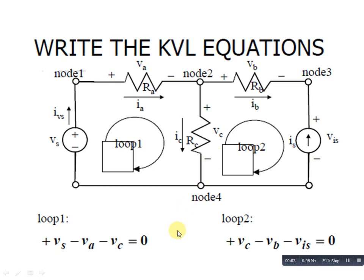In this lecture I will explain how to make KVL equations for a particular circuit. In this diagram we have loop 1 and loop 2. We have to mention plus and minus signs for each electrical circuit element. This is node 1, node 2, node 3, and node 4. This circuit has 4 nodes with different electrical elements — a voltage source and a current source.